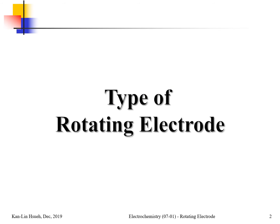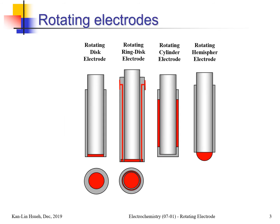First, let's think about the types of rotating electrodes. There are several types: the rotating disk electrode, the rotating ring-disk electrode, the rotating cylinder electrode, and the rotating hemisphere electrode. The most commonly used is the rotating disk electrode.